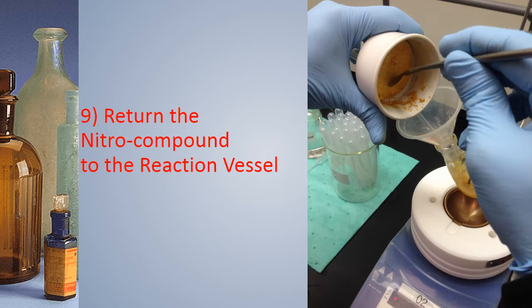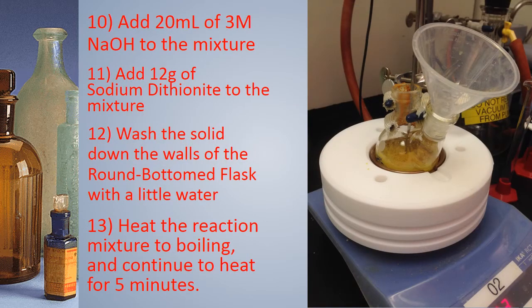We may then return the nitro compound to the reaction vessel. Add 20 milliliters of 3 molar sodium hydroxide to the mixture. Add 12 grams of sodium dithionite to the mixture. Wash the solid down the walls of the round bottom flask with some water. Heat the reaction mixture to boiling and continue to heat for 5 minutes.